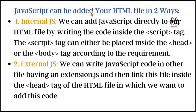JavaScript can be added into an HTML file in two ways: internal JS and external JS. We can add JavaScript directly to our HTML file by writing the code inside the script tag. The script tag can either be placed inside the head or the body tag according to the requirement. In external JavaScript, we can write JavaScript code in a separate file having an extension .js and then link this file inside the head tag of the HTML file.